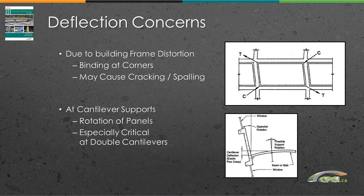Deflection of the building frame due to structural loadings can distort the frame, causing binding at panel corners, cracking and spalling, and overloading of connections. Deflection of the structure at supports can cause panel rotation and require multiple connection adjustments as members deform — this is especially critical at double cantilevers.